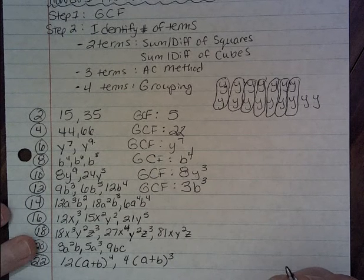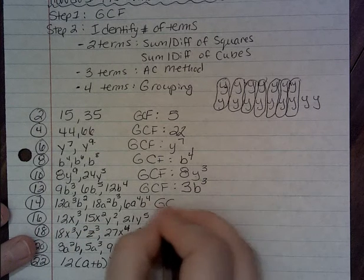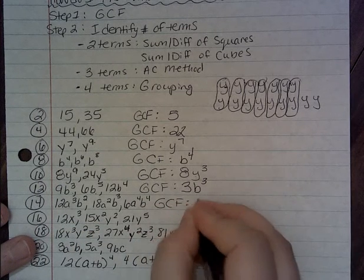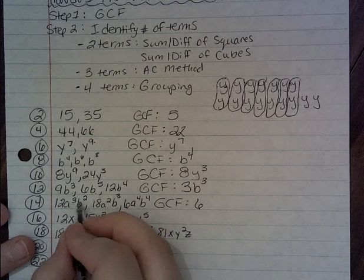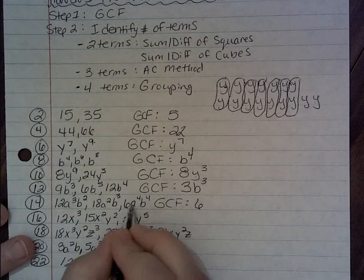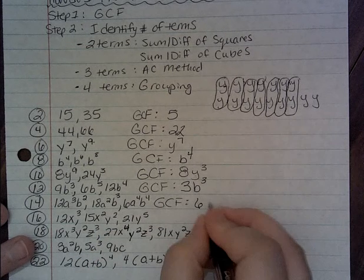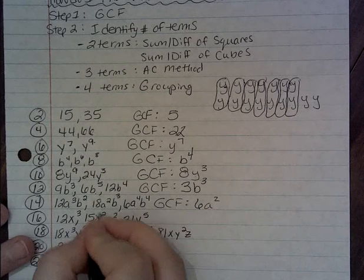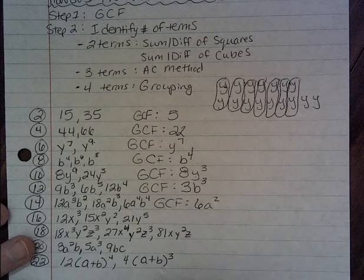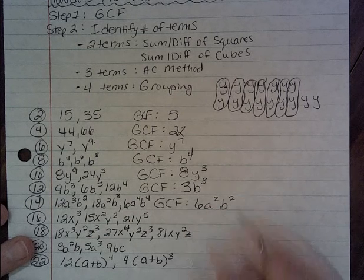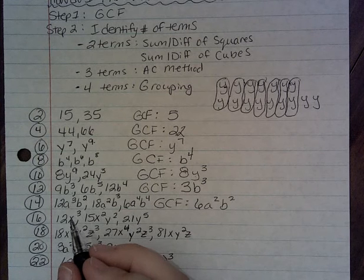On number 14, you've got 12, 18, and 6 — the biggest number would be 6. Then you've got a to the 3rd, a squared, and a to the 4th; you have to use the smallest exponent, which was a squared. Then you've got b squared, b to the 3rd, and b to the 4th, which would give you b squared for the biggest amount of b's you can take from all three groups.